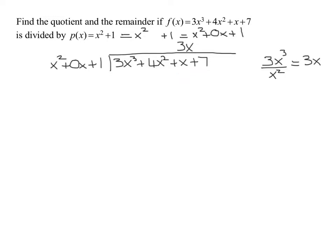And now what we have to do is multiply 3x times your divisor. So I'm going to do 3x times x squared plus 0x plus 1. And I'm going to write the answer under here under the correct terms. So 3x times x squared is 3x cubed. 3x times 0x is 0x squared. And 3x times 1 is 3x.